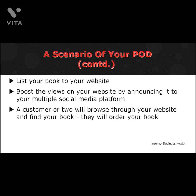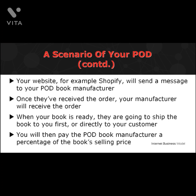When a customer finds your book and places an order, Shopify will send a message to your POD book manufacturer and automatically order the same amount your customer wants. Once they've received the order, they print, bind, and package the item into a book. You'll get to see the status of your book production in your Shopify account. When your book's ready, they ship it to you first or directly to your customer — depending on your agreement with the manufacturer. You then pay the POD book manufacturer a percentage of the book's selling price. The print-on-demand model works with products like mugs, necklaces, hoodies, shirts, leggings, and virtually any printed items.